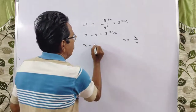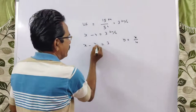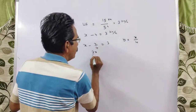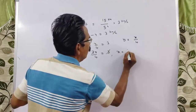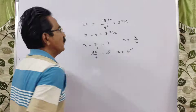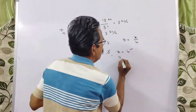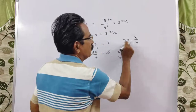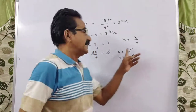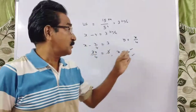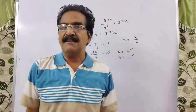X minus X by 4 is equal to 3. That gives 3X by 4 is equal to 3. So X is equal to 4, and Y is equal to 4 by 4, which is 1. So the still water boat velocity is 4 kmph and stream velocity is 1 kmph.